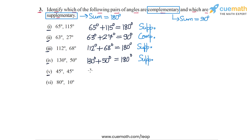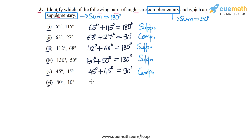In part 5 we have the angles 45 degrees and 45 degrees. 45 plus 45 is equal to 90, so this pair of angles is a pair of complementary angles.